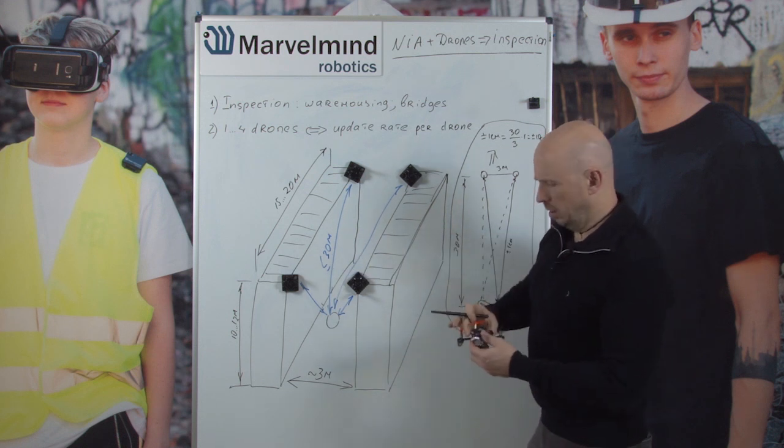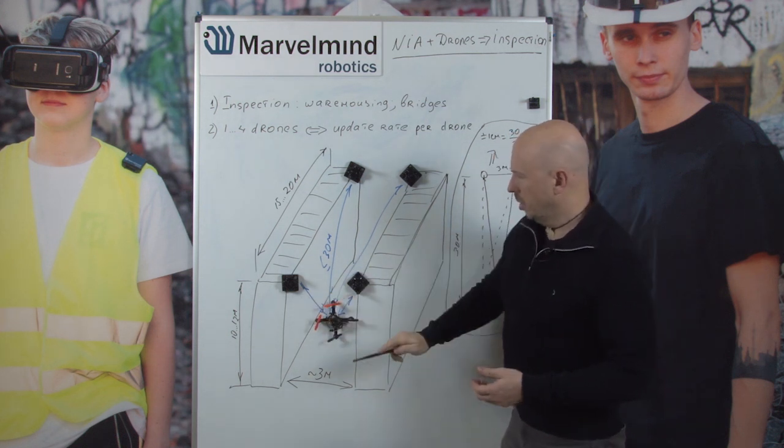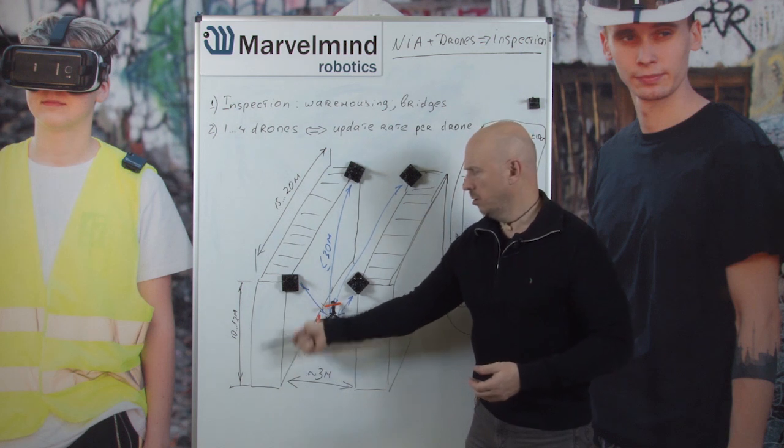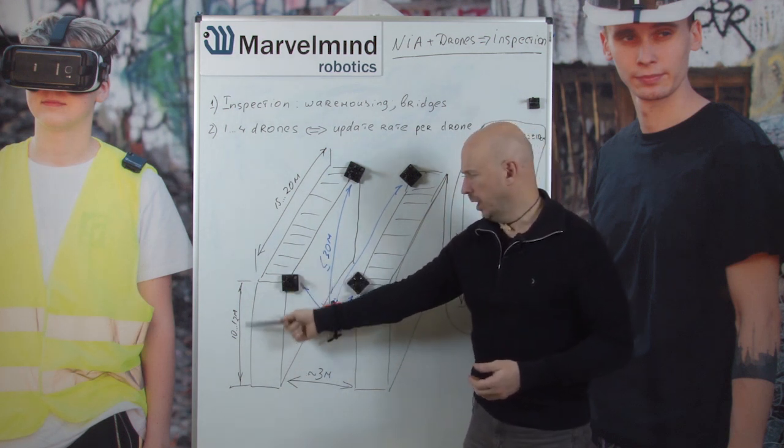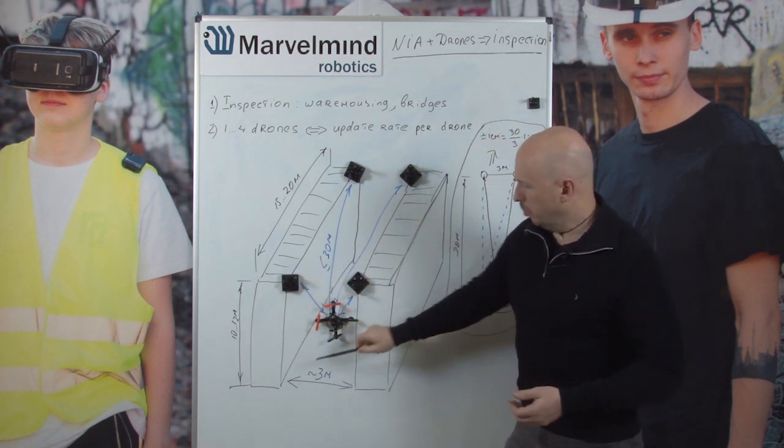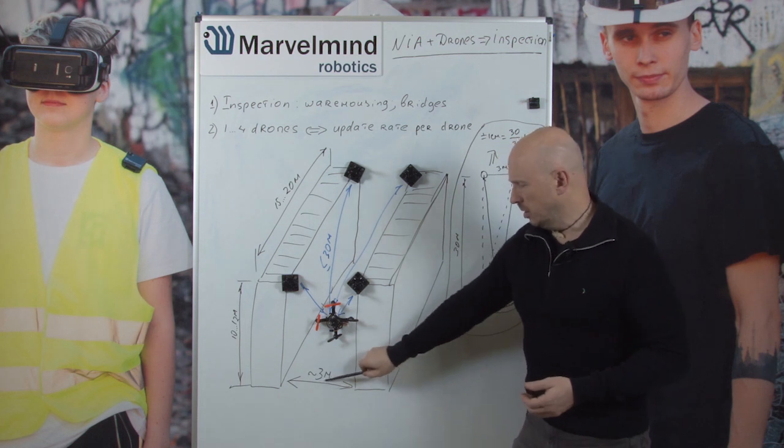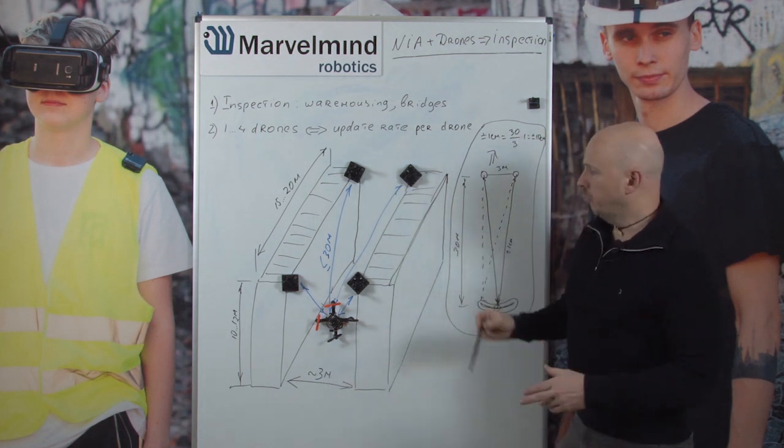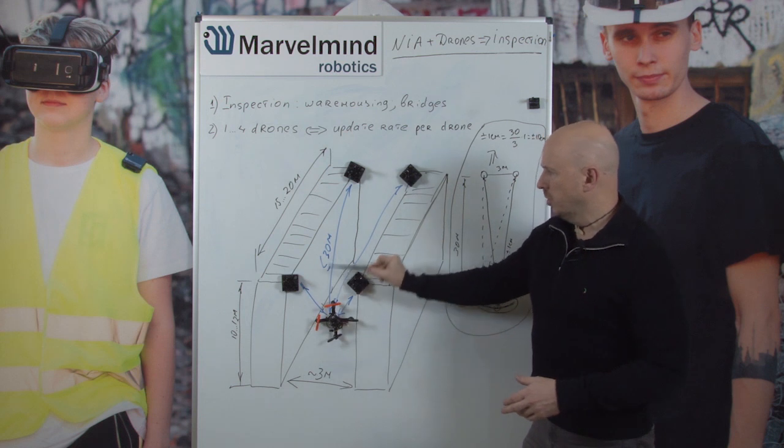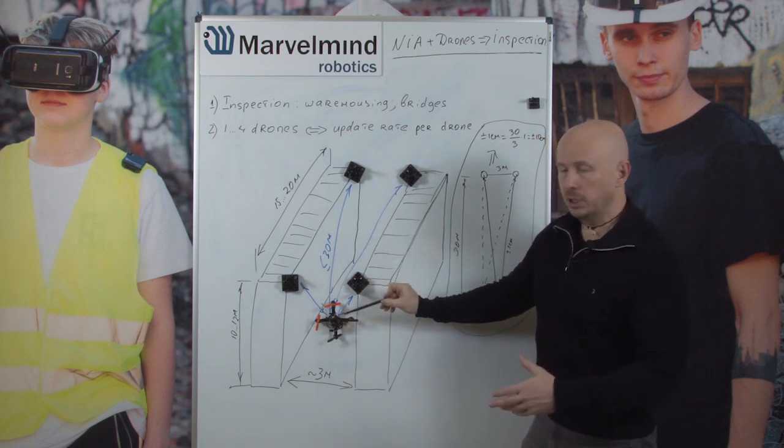So imagine this is a warehouse. Typical shelves height is 10 to 12 meters. Between the shelves, aisles are 3 meters, and we want the drone to fly for inspection.